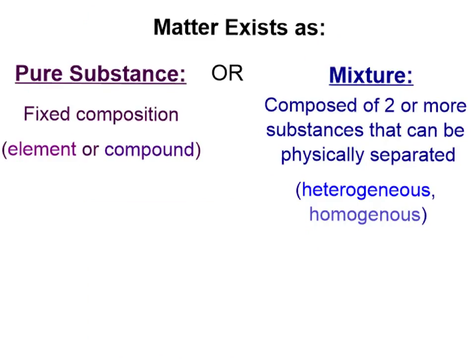Now that we know what pure substances are, let's take a look at what mixtures are. Mixtures are composed of two or more substances that can be physically separated — that is different from a pure substance. We cannot physically separate sodium and chlorine from each other in a compound; that requires a chemical reaction. In a mixture, however, we have different substances that can be physically separated.